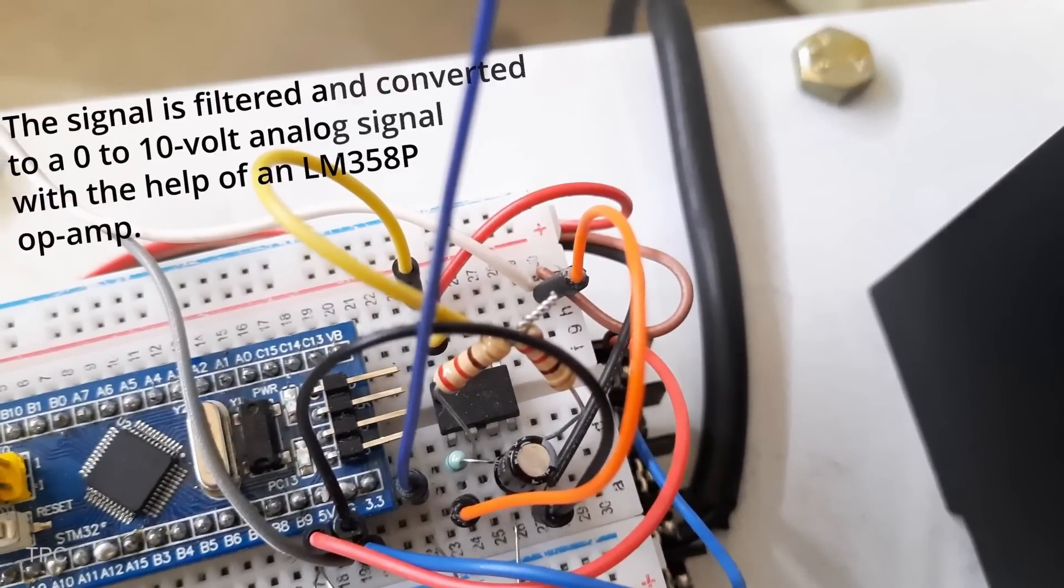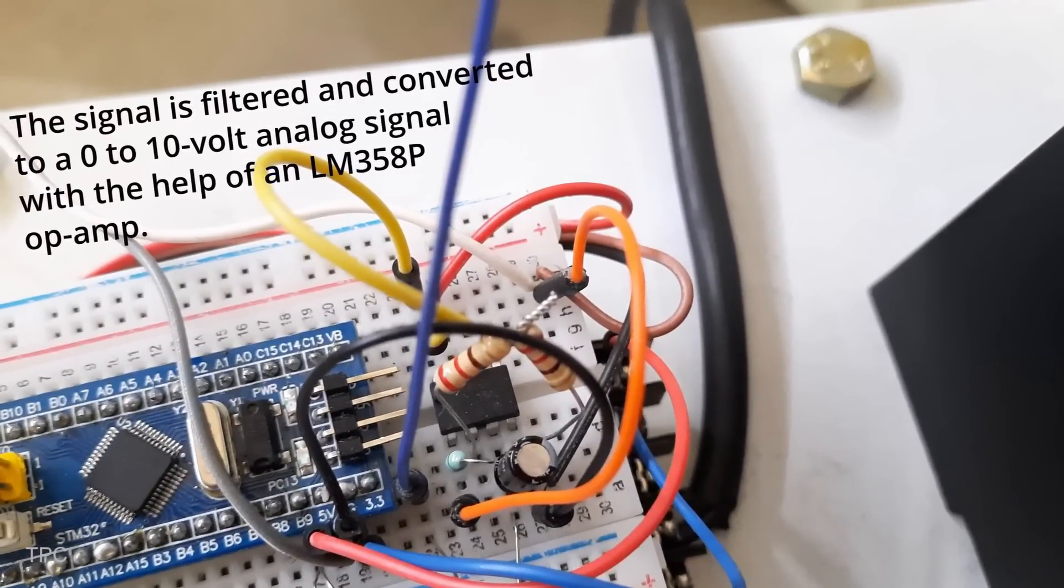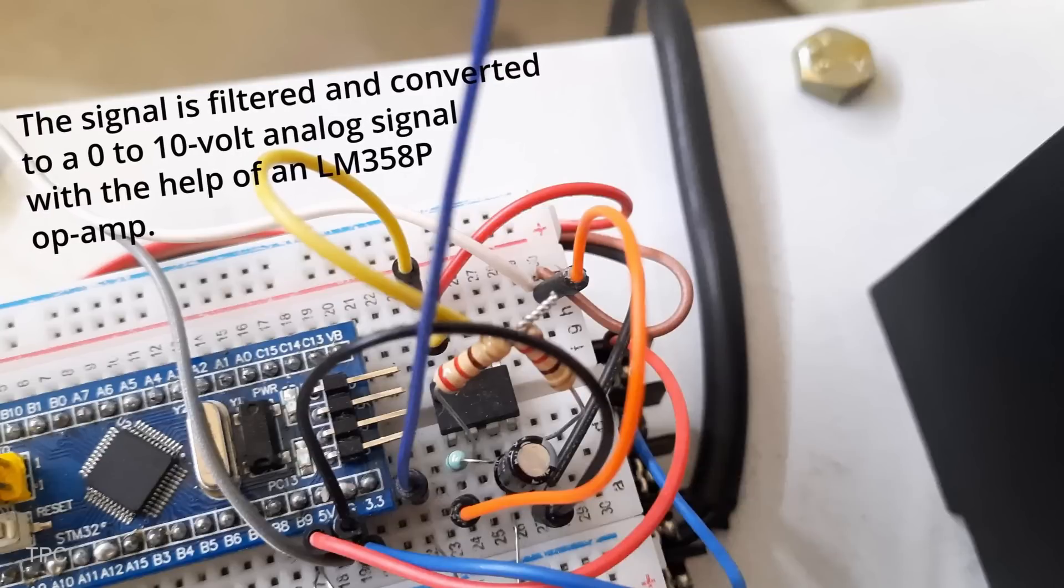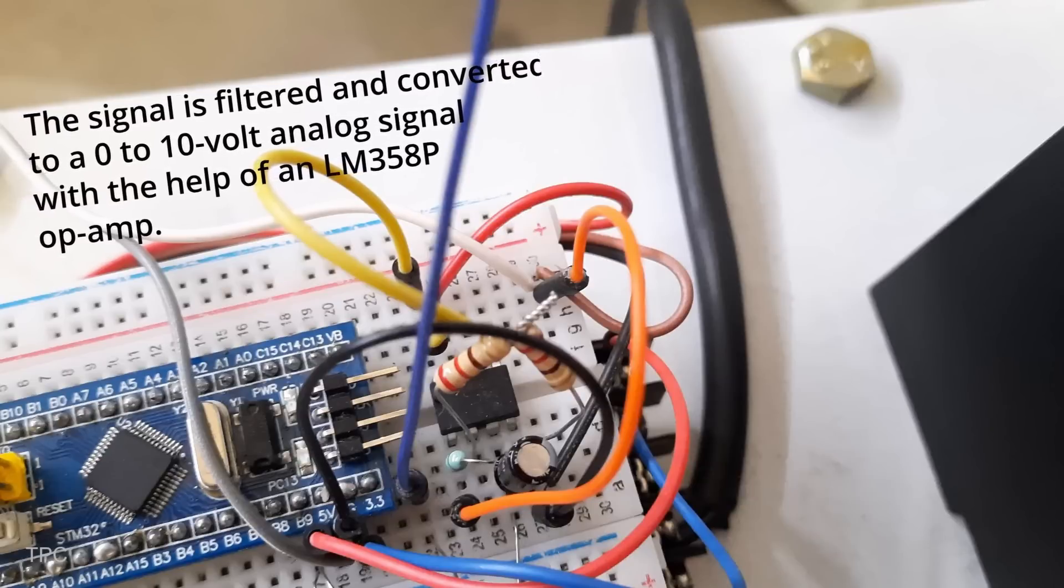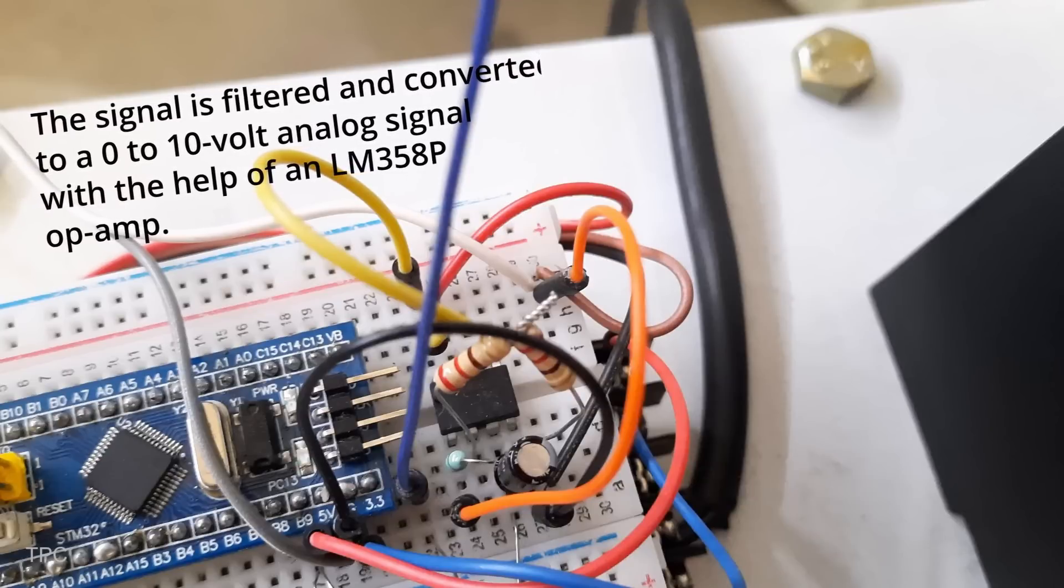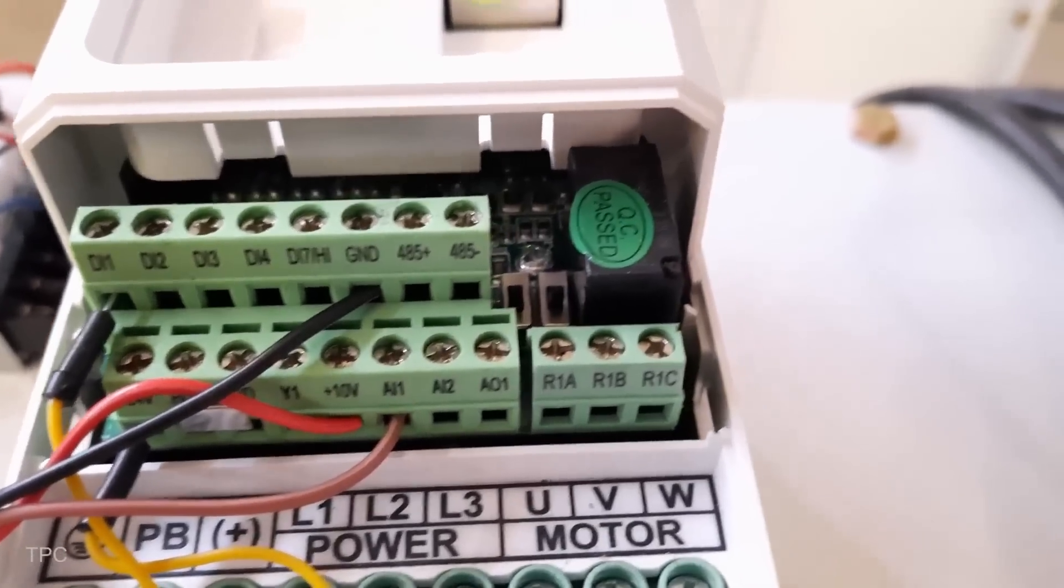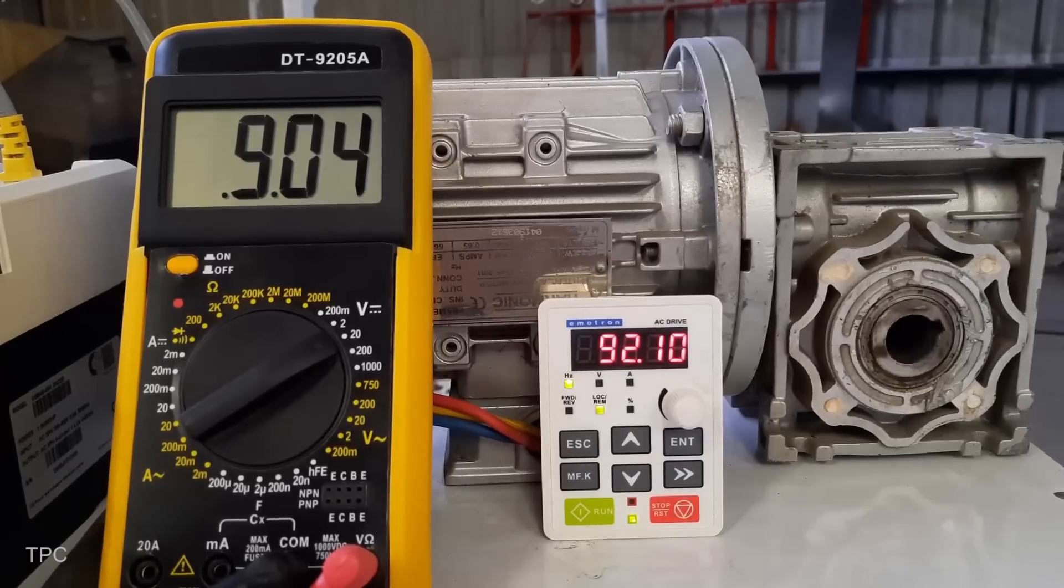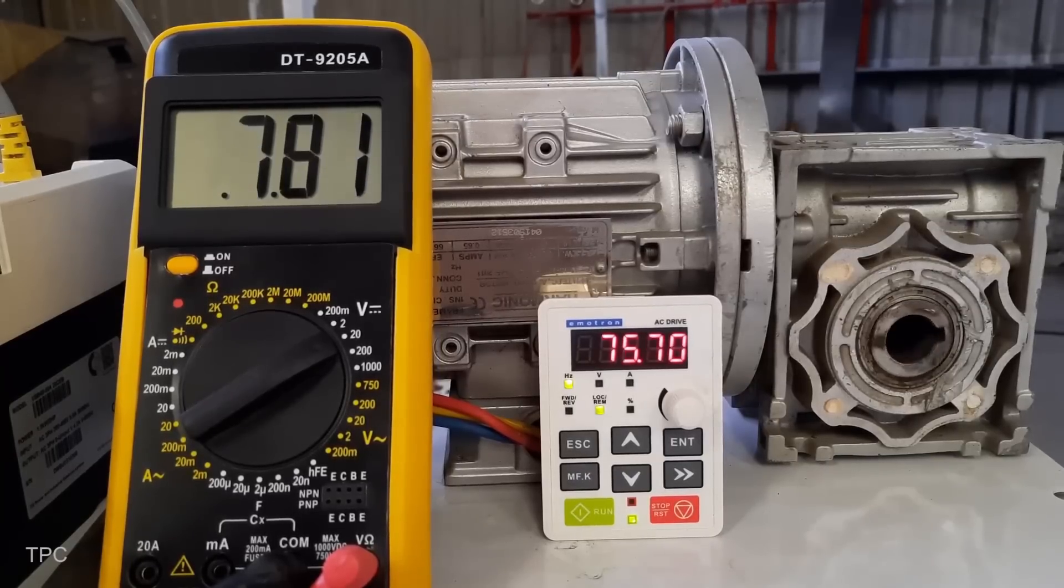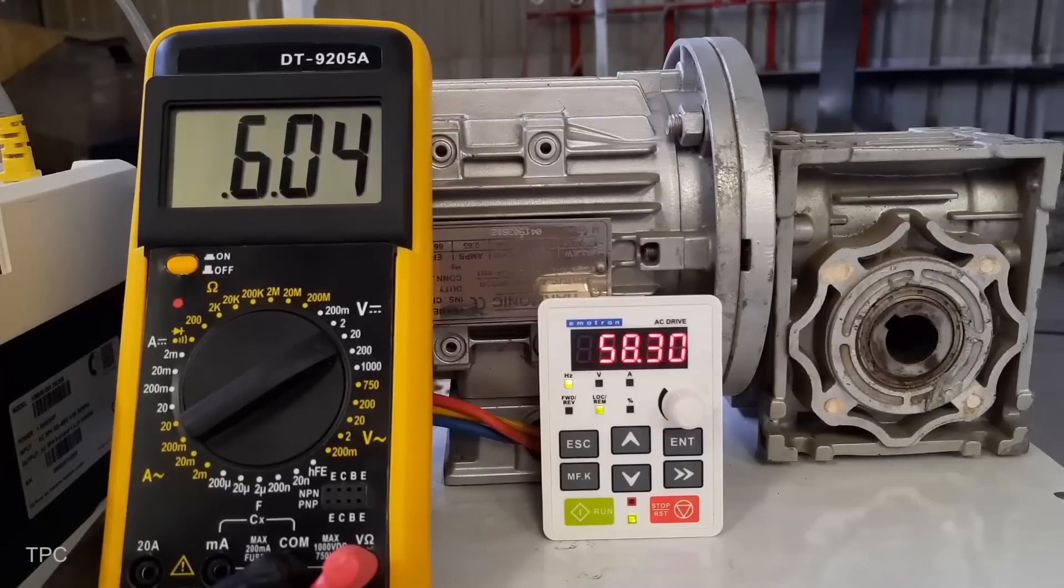However, since the STM32 operates at logic-level voltage, an operational amplifier circuit is used to scale the output up to 10 volts, making it compatible with the analog input of the VFD. With this voltage applied, the VFD adjusts the frequency of the AC motor's power supply, allowing precise speed control.